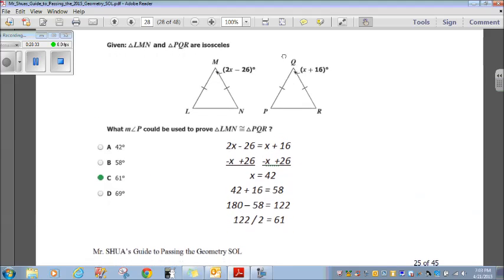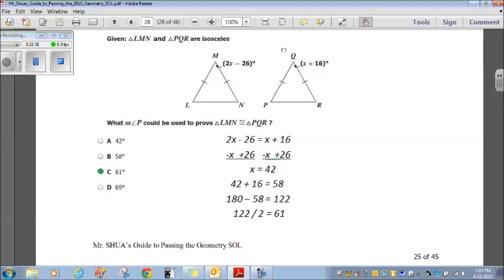Given triangle LMN and triangle PQR are isosceles. Okay. So, these are isosceles. Okay. So, that means the angles here, they're going to be congruent. What measure of P could be used to prove the triangles congruent? All right. Fair enough. So, they're both isosceles, which means the base angles are going to be congruent. And then, these here. I'm going to set these two equal to each other. 2X minus 26 equals X plus 16. Add 26 to both sides, subtract X. X is 42.